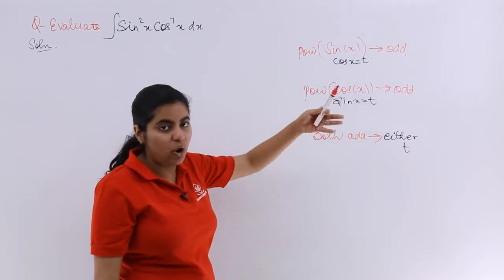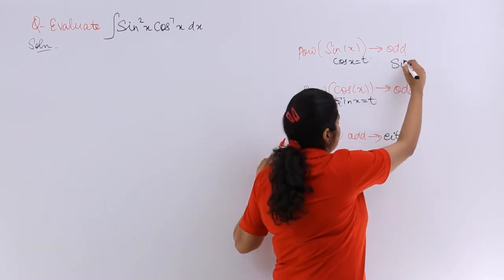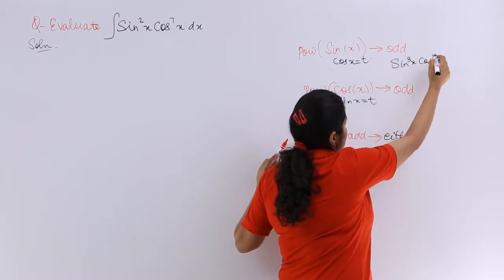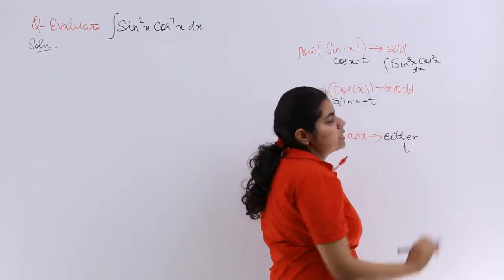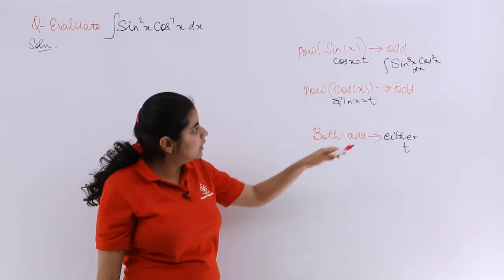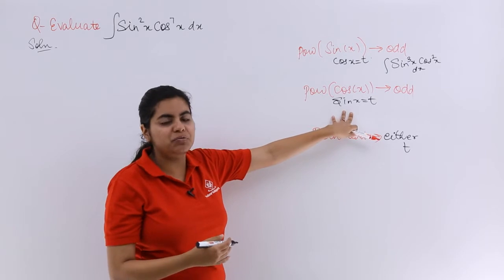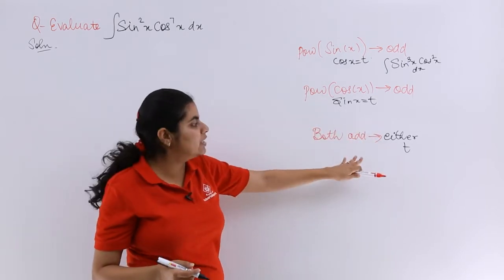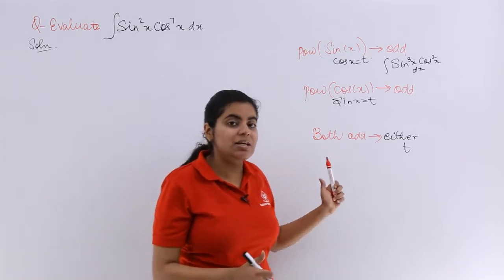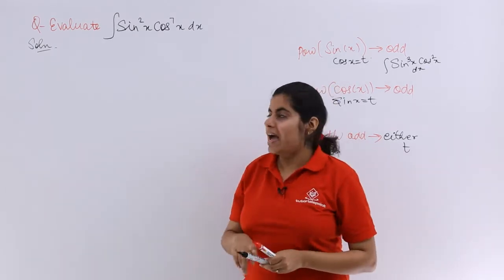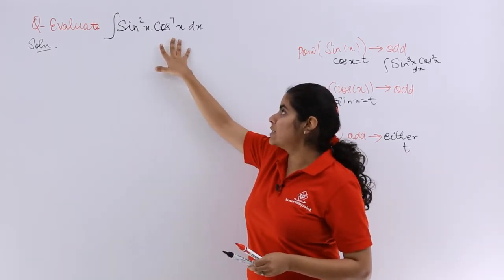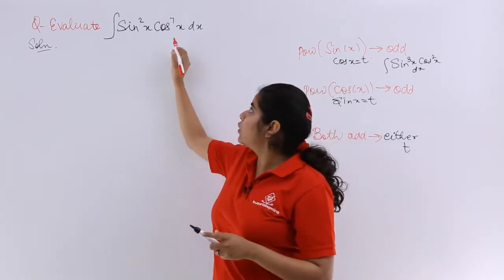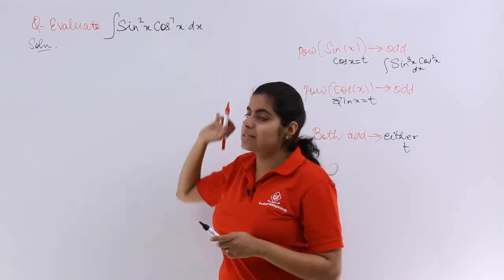For sin x power odd, the question might look like sin³x · cos²x dx, where the power of cos is not odd. Another case is power of cos odd — maybe cos⁵, sin². Here the question is sin²x · cos⁷x, so the power of cos is odd this time.